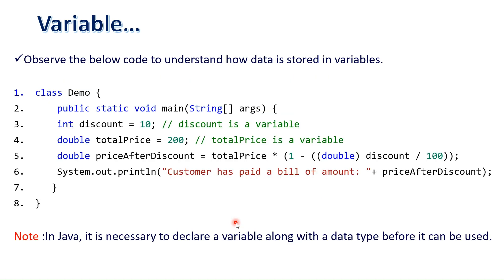Here a simple example is given to store data in a variable. Here, discount is a variable, total price is a variable, and price after discount is also a variable. This is called an expression to be evaluated. After that, the price after discount variable has to be displayed. This is how you can declare a variable.